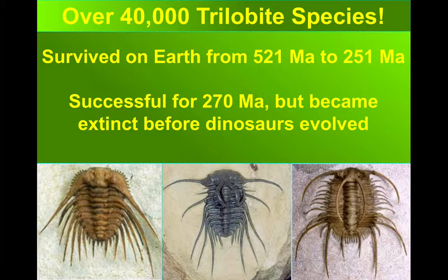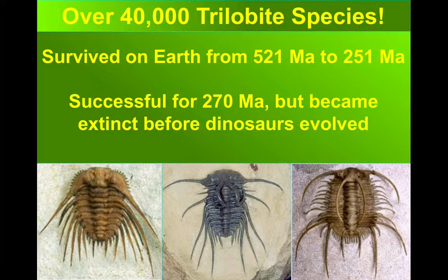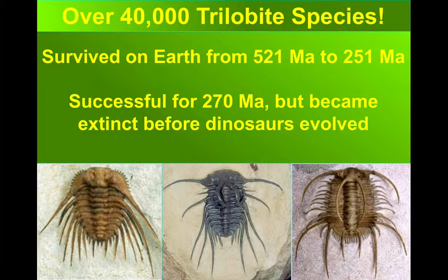Trilobites are an incredibly diverse group, with over 40,000 trilobite species recorded. They lived from the middle Cambrian through to the mass extinction at the end of the Permian period, but really reached their peak quite early on in the Cambrian and Ordovician.